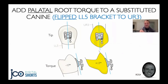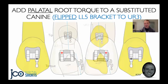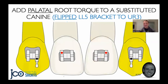A mandibular second premolar bracket in its proper orientation will have minus 17 degrees of torque — 17 degrees of labial root torque. When we flip that bracket, the post is now incisal, and we have 17 degrees of palatal root torque, just like a central incisor bracket, but with the advantage of the curved bracket base so we can do the enameloplasty later on. If we take a close-up look, you will see Dr. Rosa is using a lower left 5 on an upper right 3 and vice versa — the bracket is flipped, with the post incisal.